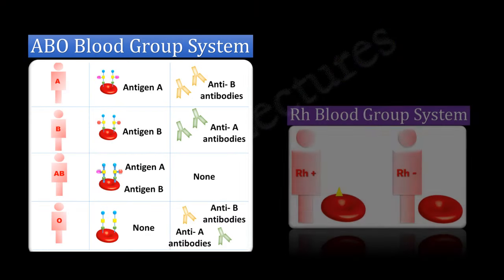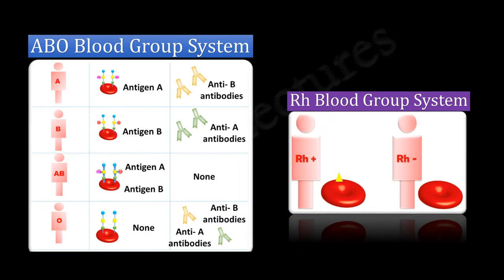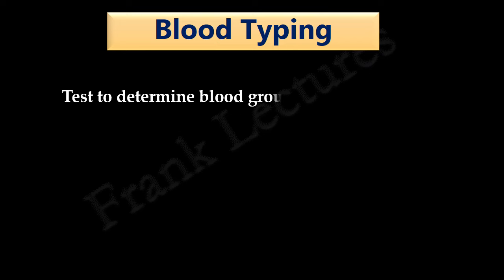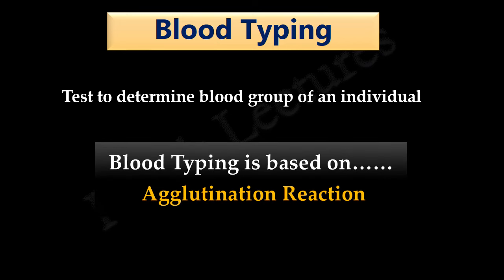We have understood the ABO blood group system and RH blood group system in previous video lectures. We also saw that on the basis of these two blood group systems, humans have eight blood types. In today's video lecture, we will explain blood typing or blood group test. Blood typing refers to the test to determine the blood group of a person. This test is based on agglutination reaction.